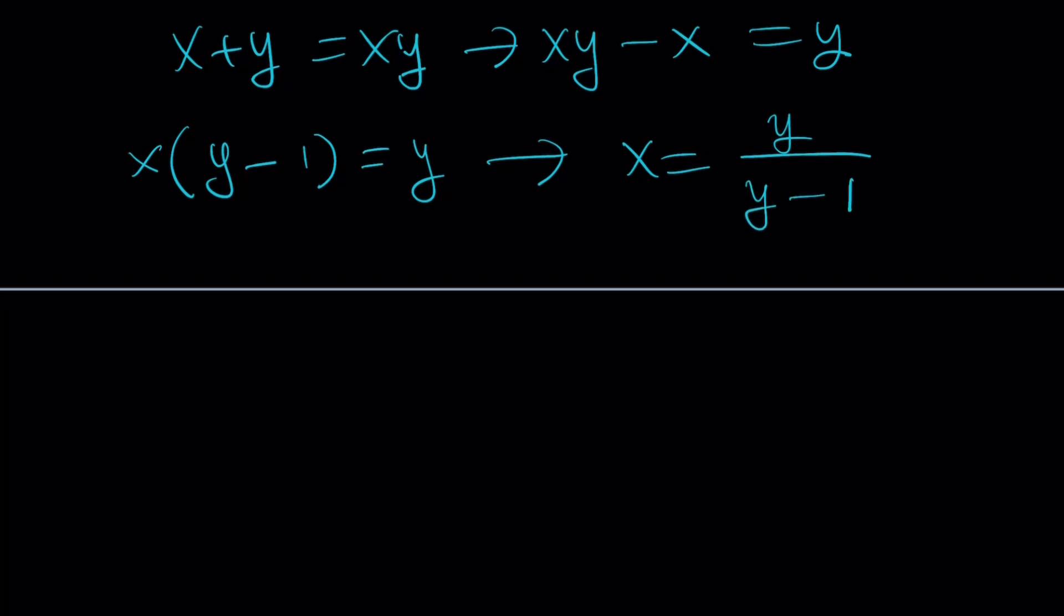Obviously, if you solve for y, you would get x over x minus 1 because they are completely interchangeable. We got x in terms of y, which is nice. Now we can consider another system which can be written as x squared plus y squared equals xy. Notice that we have three expressions but that gives us two equations.